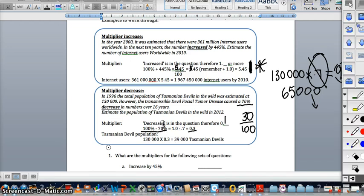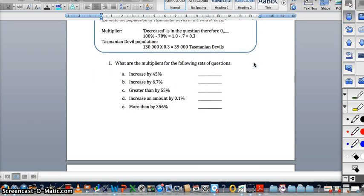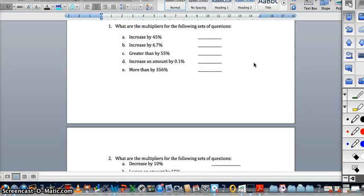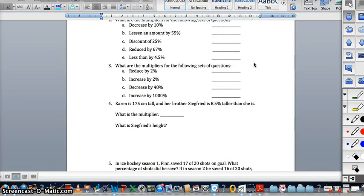There's a series of questions following on from that, for practice. Those questions, to start with, are quite simple. If you were increasing an amount by 45%, or increasing by 6.7%, etc., what would be the multiplier? So, some of you will find this incredibly simple. Some of you will find it incredibly challenging, and that's okay. At least you know, it's good repetition.